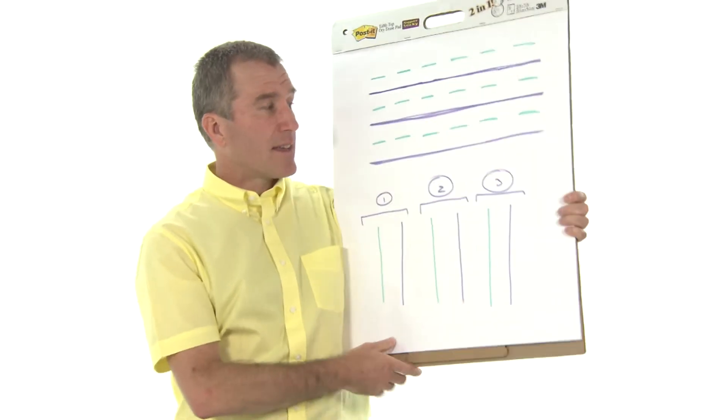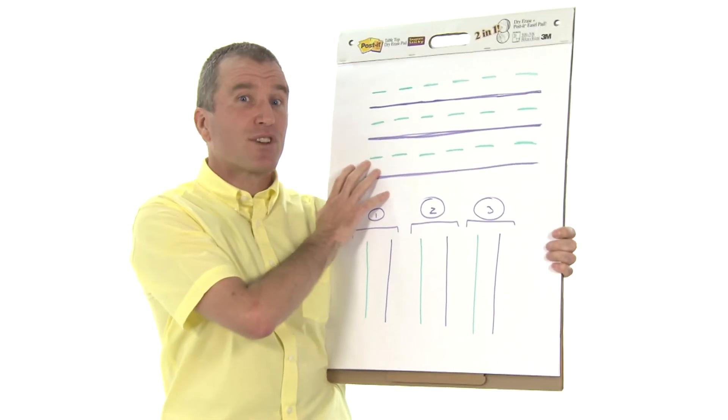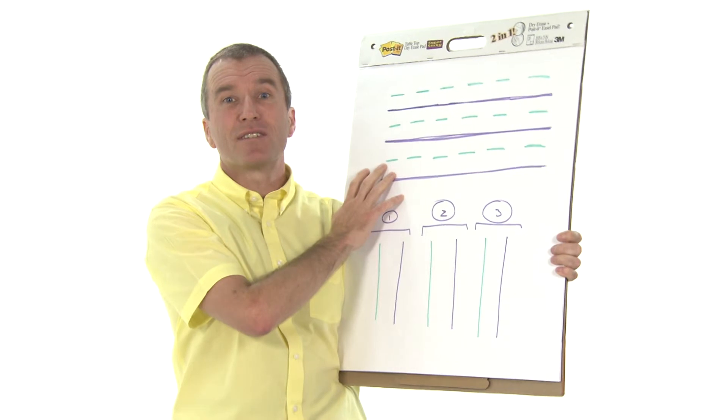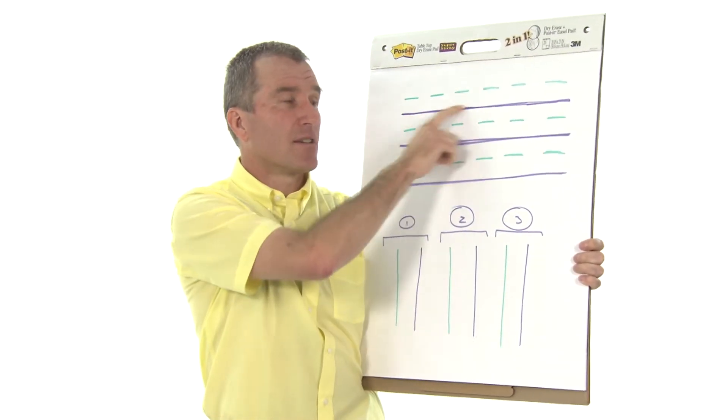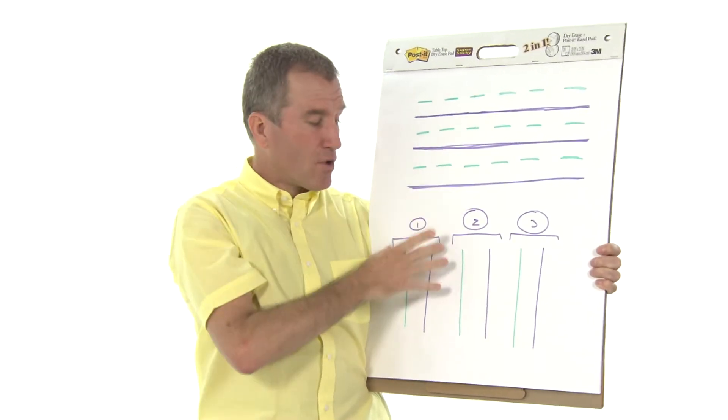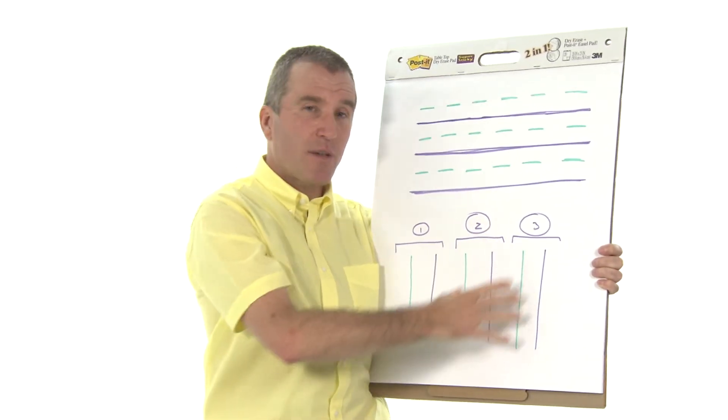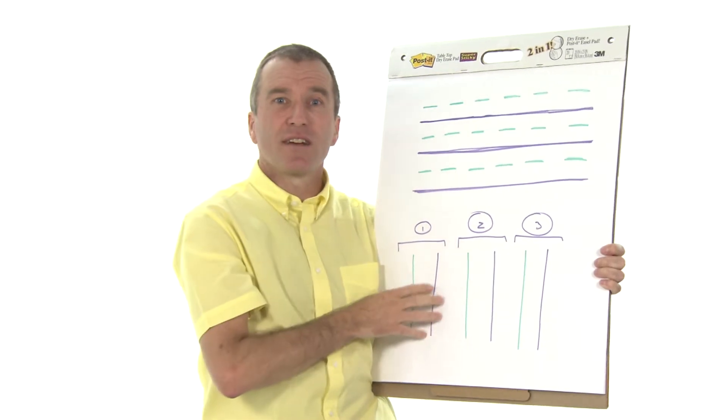So what is interlace? Well, interlace is an analogue TV compression system invented back in the 1930s and 1940s. And basically what it means is that every other line of your TV picture of your 25 or 30 frames per second were shot at a slightly different time.